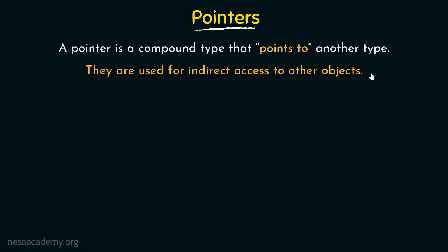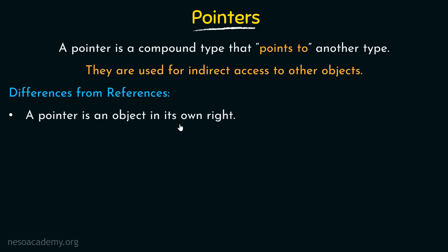We will see what are the differences between references and pointers and what makes pointers different. A pointer is an object in its own right. When we studied about references, we said that references are always bound to another type — we could never declare a reference without initializing it. But a pointer is different. A pointer is an object in its own right; it does not have to point to something at the beginning itself.